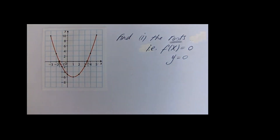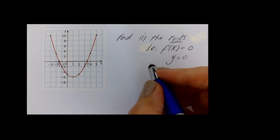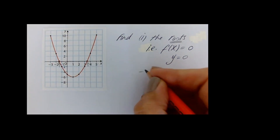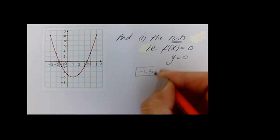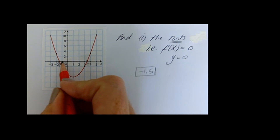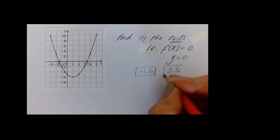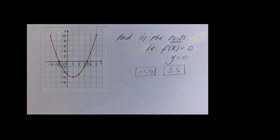The curve cuts the x axis here and here — those are the solutions of the quadratic. Approximately minus 1.5 here and approximately 3.5 there. Those are the roots where f of x is equal to 0.